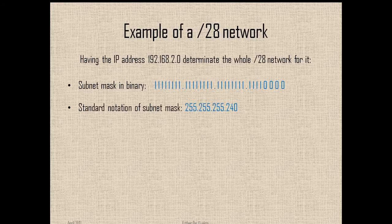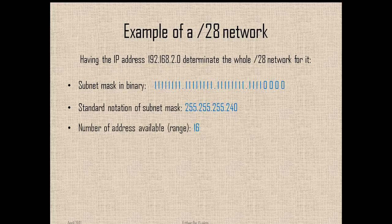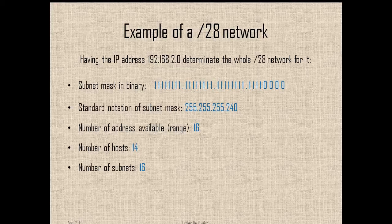Then we found the subnet mask in decimal, that is going to be 255.255.255.240. And then we are going to find the range, that is 16, and the number of hosts, that is 14. And the number of subnets is going to be 16.